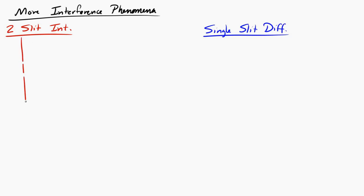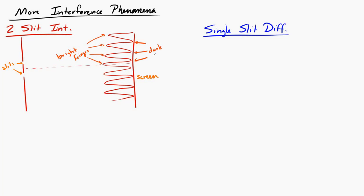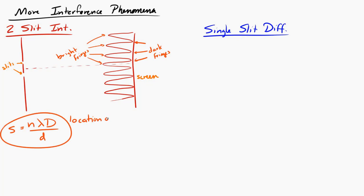Two-slit interference is created when waves pass through two slits and then we get a projection on a screen over to the side. When that happens, we get a series of bright and dark fringes on the screen. The location of the bright fringes can be found using an equation: S is equal to n lambda d over d. That gives us the location of the nth bright fringe, where the central bright fringe is n equals 0, the next one out is n equals 1, and so on.